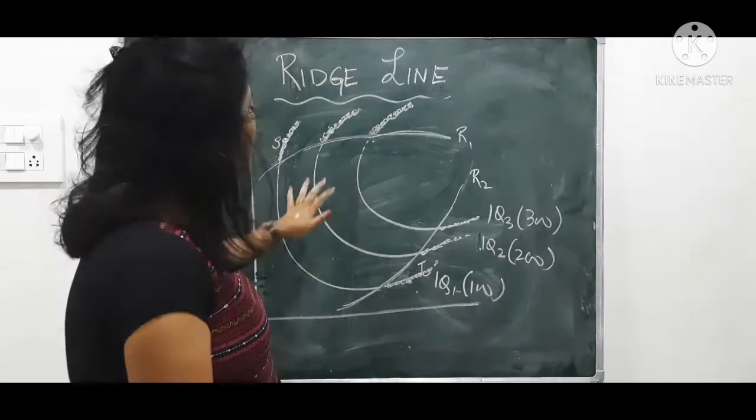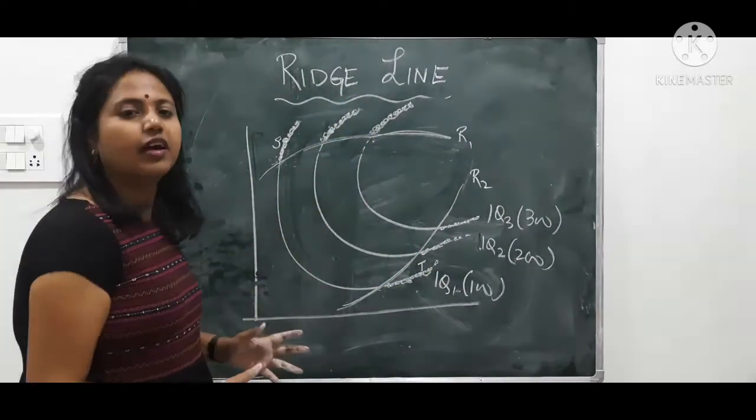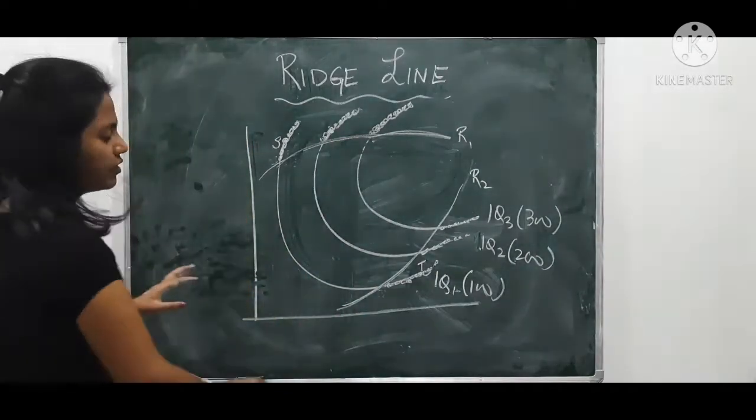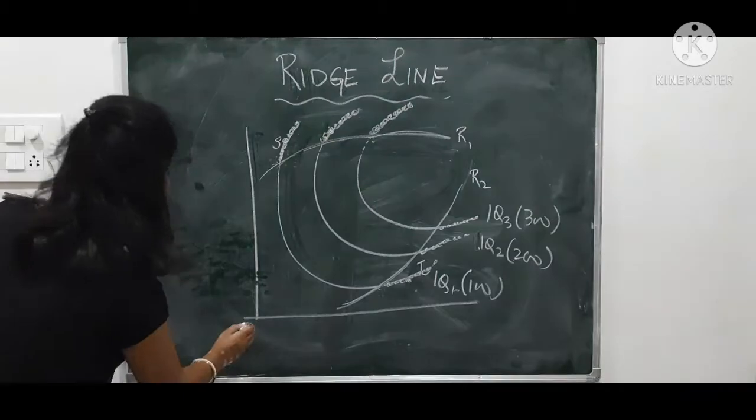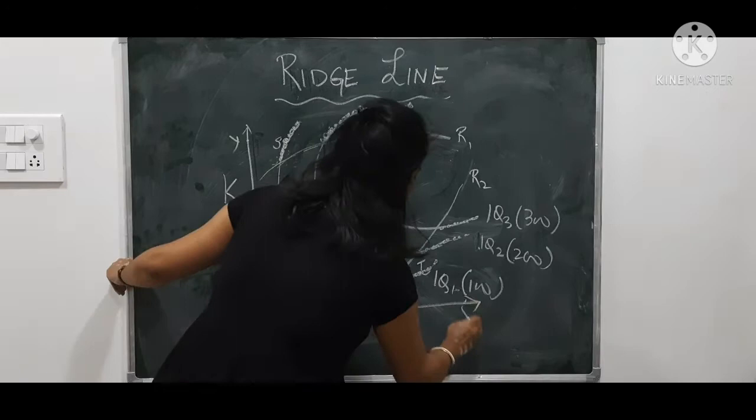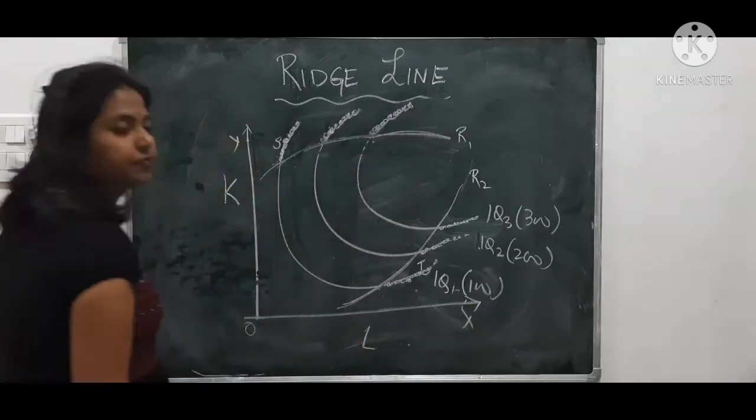Now here on the board you can see many things and I think the things are very confusing. Don't get confused, let's start from the scratch. Let's understand this is O, Y axis, this is the capital and this is O, X axis and this represents labour.